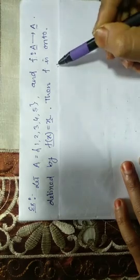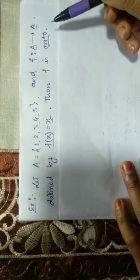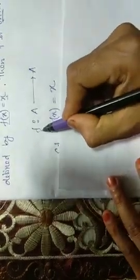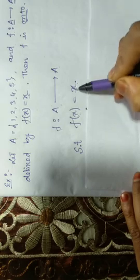What is A? A is the set which contains 5 elements. Here, what is the domain set? A is the domain set. What is the codomain set? A. We don't have any idea about range. And the function is defined as f of x equal to x.